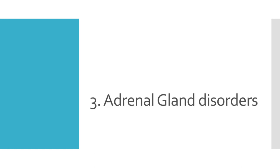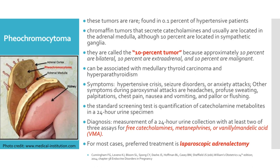The third section covers adrenal gland disorders. First, we discuss pheochromocytoma. These tumors are very rare and are found in 0.1% of hypertensive patients. These are chromaffin tumors that secrete catecholamines and usually are located in the adrenal medulla, although 10% are located in sympathetic ganglia. They are called the 10% tumor because approximately 10% are bilateral, 10% are extra-adrenal, and 10% are malignant.